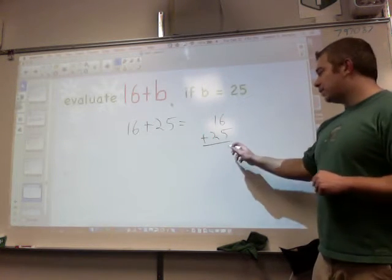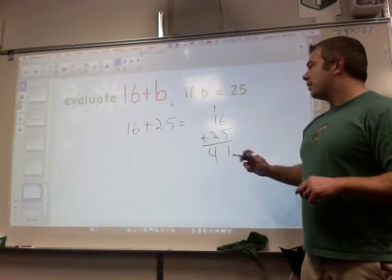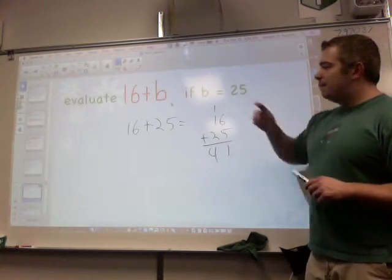When you get at it, 6 plus 5 equals 11. 1 plus 1 is 2, 2 plus 2 is 4. The answer is 41. So 16 plus b equals 41 if b equals 25.